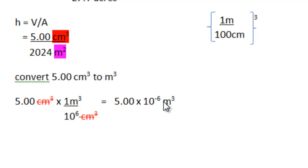Remember, this number here is the numerator of this fraction. So, we need to do one more step. And that is to divide 5 times 10 to the minus 6th meters cubed by 2024 meters squared.